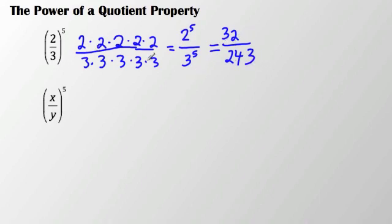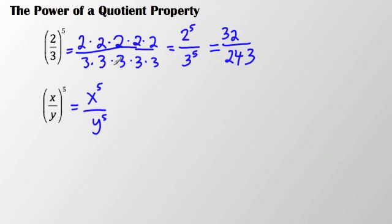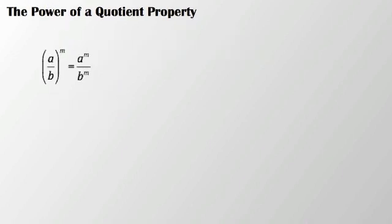So simplified and evaluated. Similarly, if I take x to the 5th over y to the 5th, I could write it as x times x times x times x times x over y times y times y times y times y. This illustrates the power of a quotient property: when I have two different bases being divided with the same exponent, I can separate that out. So a over b in parentheses to the m equals a to the m over b to the m.